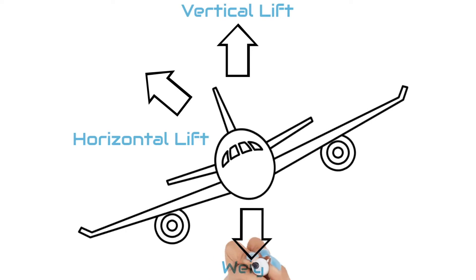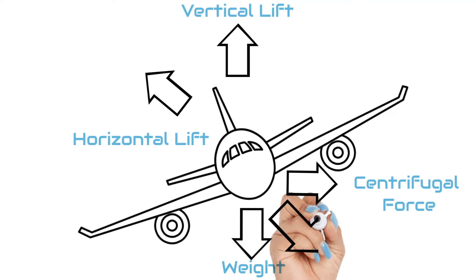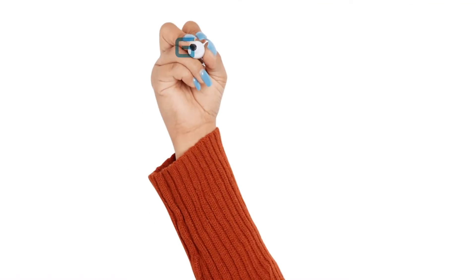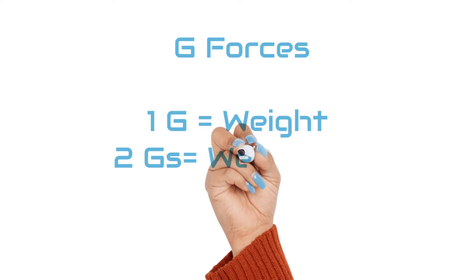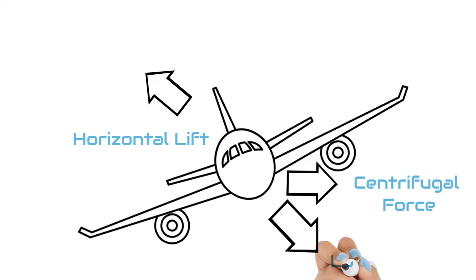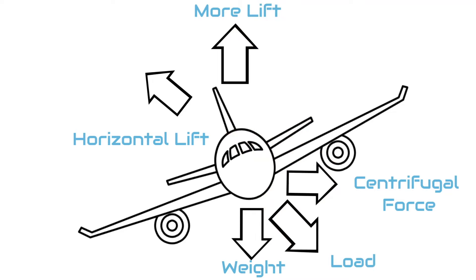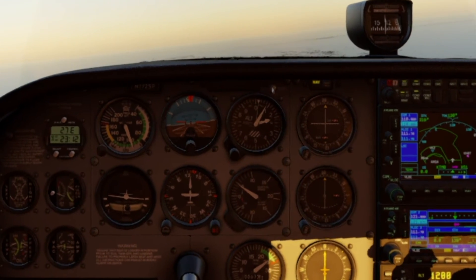When we combine our airplane's weight and the centrifugal force, we get a resultant force called load, which is measured in g's — the force of gravity multiplied. For example, 1g equals the weight of the airplane, and 2g is the weight of the airplane times 2. Because the load in a turn is greater than the weight, we need to produce more lift so that we don't descend. This is why we pull back on the yoke slightly when turning in order to maintain our altitude.